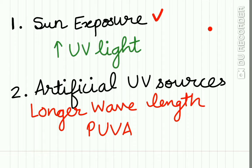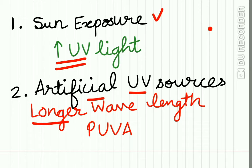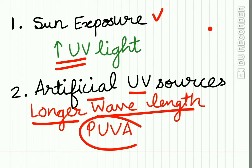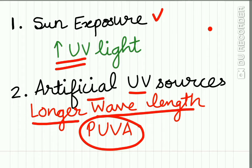Sun exposure is a primary cause of malignant melanoma. Increased exposure to ultraviolet radiation may cause malignant melanoma. Artificial sources of UV light, mainly the longer wavelength ultraviolet light, can also cause malignant melanoma. PUVA therapy — a combination of psoralen and long-wave ultraviolet radiation — increases the risk of malignant melanoma.